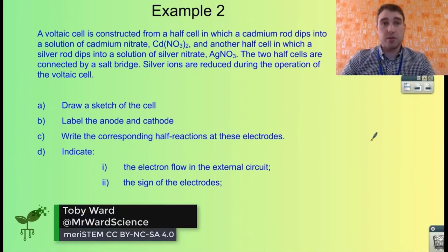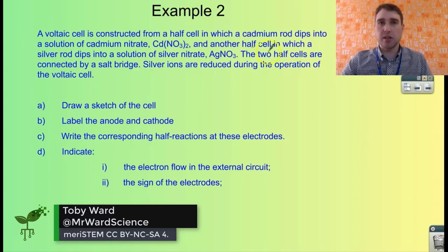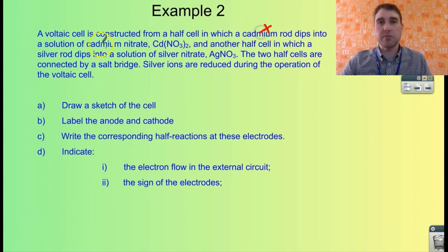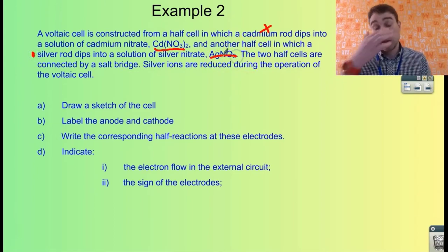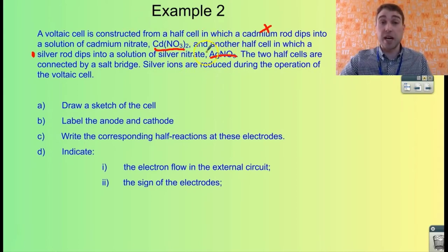Here's our second example question. We've got a voltaic cell constructed from a half-cell which is cadmium. I'm going to highlight some important bits as we go through. We've got a cadmium rod dipping into cadmium nitrate - that's our electrolyte on that side. On the other half, we've got a silver rod going into silver nitrate. So we've got what our metals are and our electrolytes.